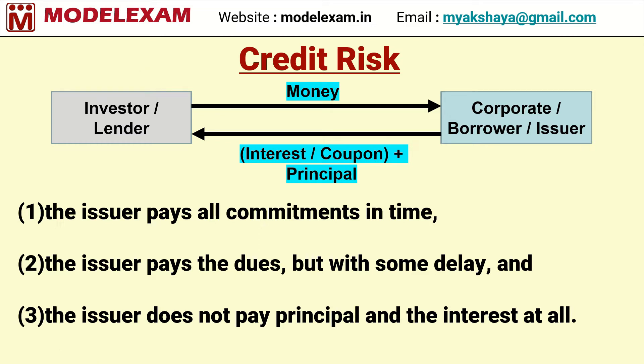Credit risk — what is credit risk? Let us understand this with an example. Investors lend money to corporates. Here the corporate is the borrower and they in turn will issue bonds. These bonds have a fixed term, say 5 years or 10 years, and during this entire term they will pay interest to the investor. These interest payments are known as coupons, and at the end of the term the borrower will repay the principal amount. This is the general structure of a bond.